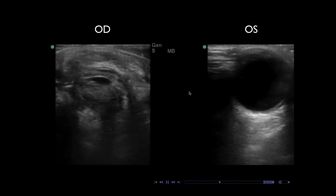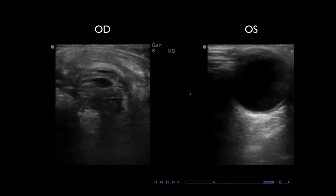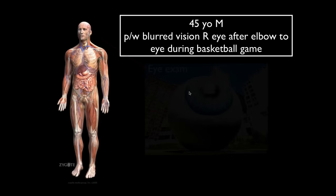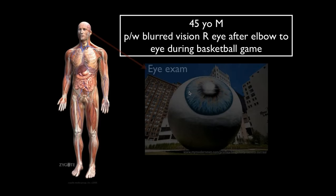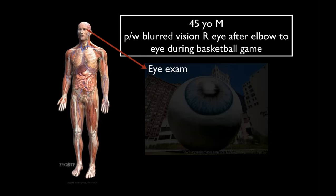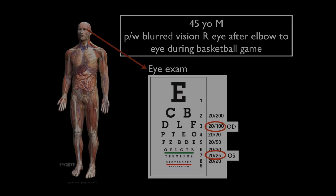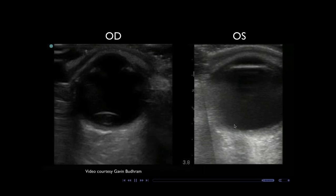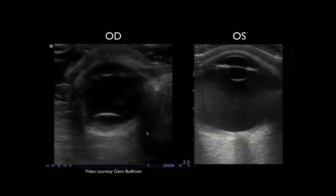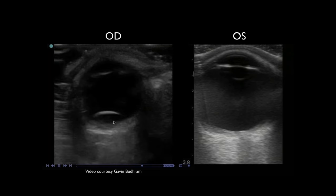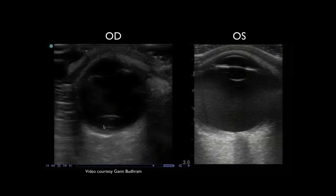Case 3: A 45-year-old male presents with blurred vision in his right eye after being hit with an elbow playing basketball. Left eye visual acuity is 20/25; right eye is 20/100. On ultrasound, the left eye looks normal, but the right eye shows a bright white line displaced down below — the lens, which should be up in the anterior segment, has been dislocated to the bottom of the vitreous. This is lens dislocation, and requires an urgent ophthalmology call for repair.